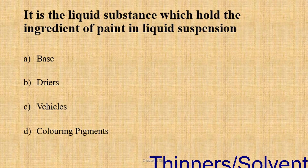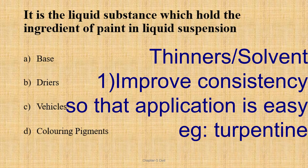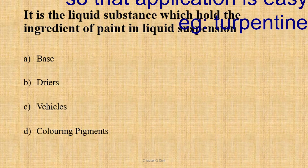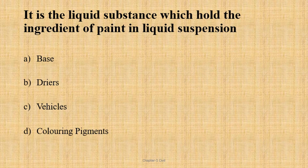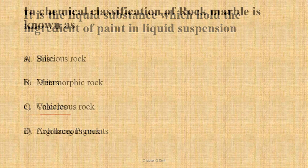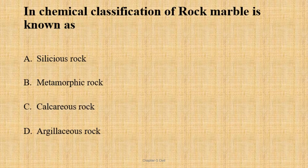The next item is a liquid substance which holds the ingredients of paint in liquid suspension. The next item is a chemical classification of marble, which is also a classification of stones. The first item is stone type.